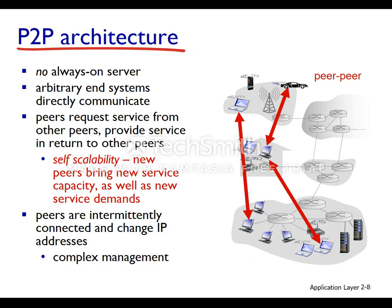In the peer-to-peer architecture — which you may see if you're using a torrent — there is no server that is always on, and arbitrary end systems communicate directly. Peers request service from other peers and provide service in return. The peer-to-peer architecture has the benefit of being self-scalable: every time a peer comes in, it brings additional capacity as well as its own service demands, allowing the architecture to grow. The peers are intermittently connected and change IP addresses, which means complex management protocols are needed.